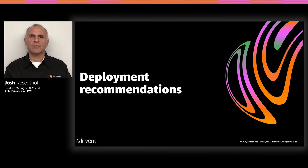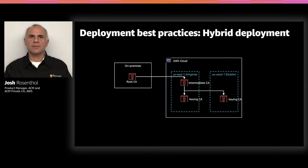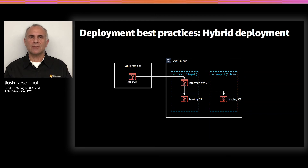Now, I want to talk about some deployment recommendations that we've seen work well for you and other AWS customers. Many organizations are similar to BlackSky in that they have multiple PKIs or a need for a PKI hierarchy to span both AWS cloud and on-premise operations. This diagram shows an example where the root CA lives on-premise and the intermediate and subordinate issuing CAs are managed by private CA. Many private CA customers built their CA hierarchies in this structure because they already had a root CA, but they wanted the availability of the cloud for certificate issuance.